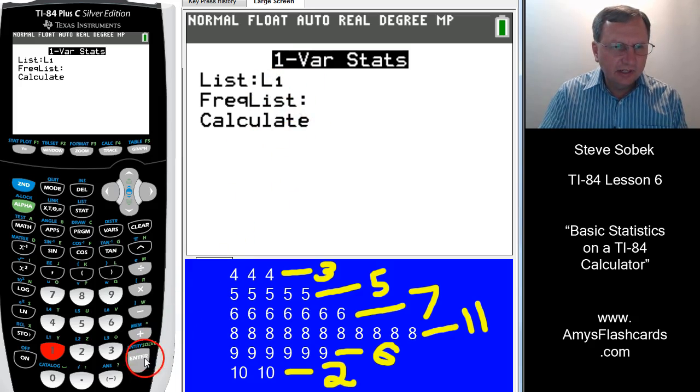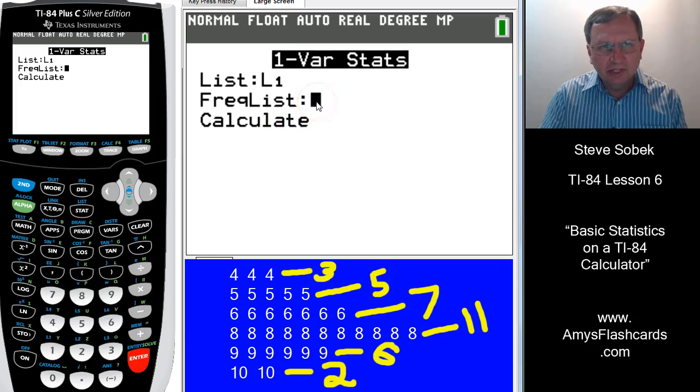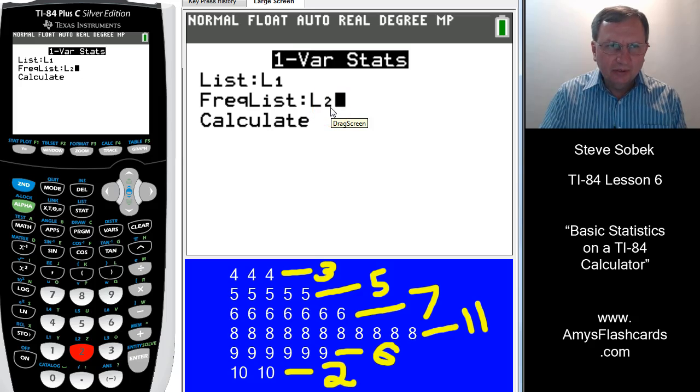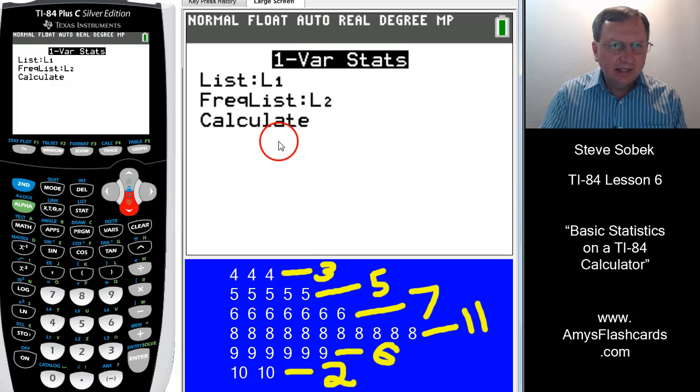Let's accept list 1 as the data list, and now that the cursor is blinking beside the frequency list, list 2 is right above the number 2, and it's blue. So you have to hit the blue second key, and then hit number 2, and look, L sub 2, which means list 2, will be now interpreted as the frequency list. Hit the down arrow key to highlight Calculate, hit enter.